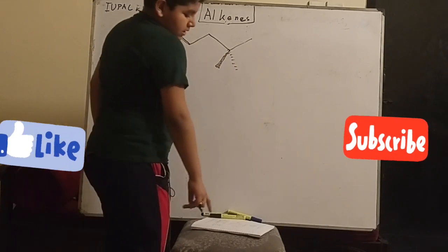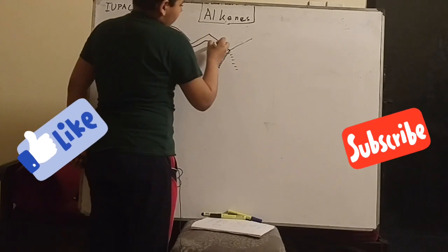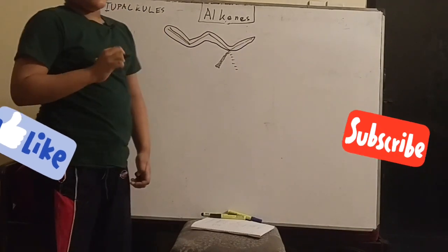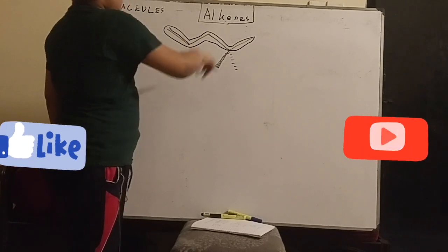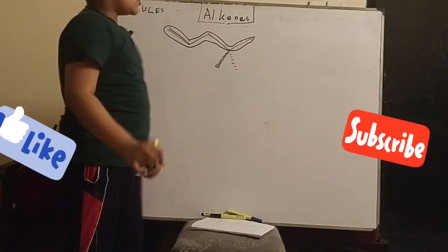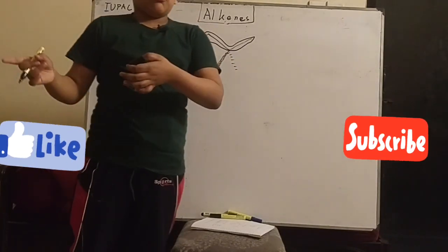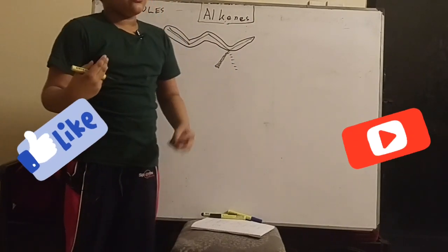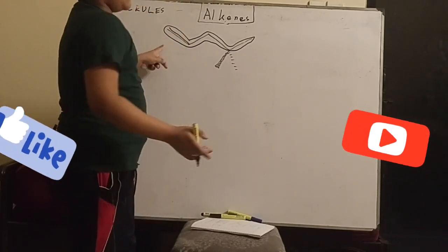Again, you have to identify the longest carbon chain. Now one thing about naming: we have to name the double bond first. So even if the substituents on the other side of the molecule, if the other substituents occur sooner, it will not be the bigger priority than the double bond or our alkyne.